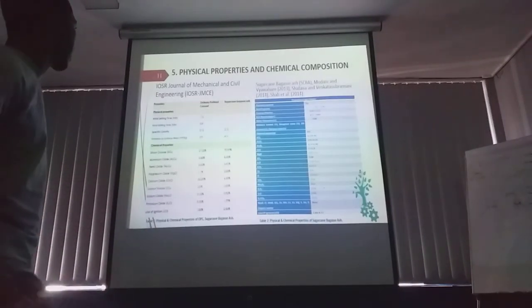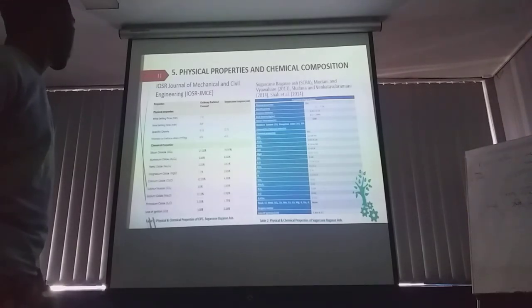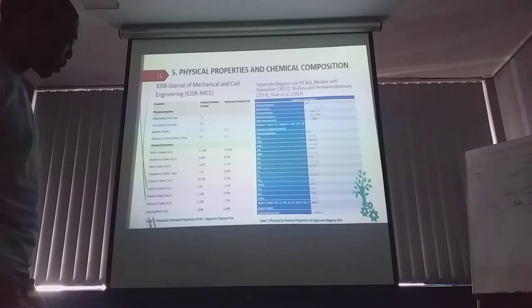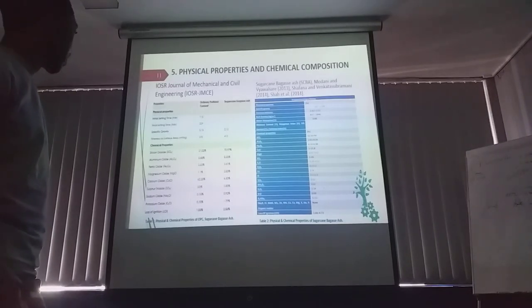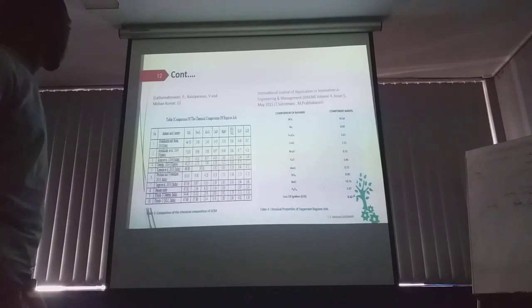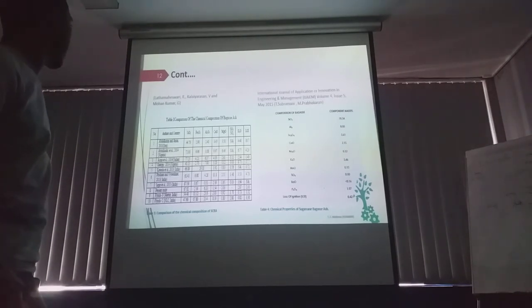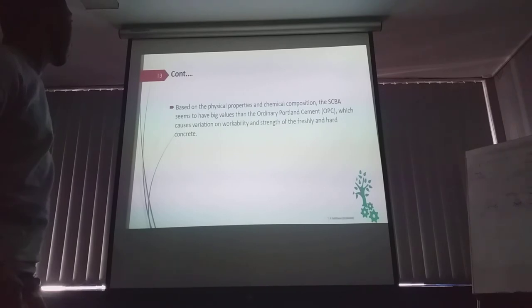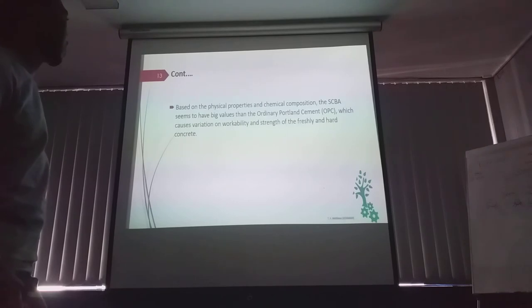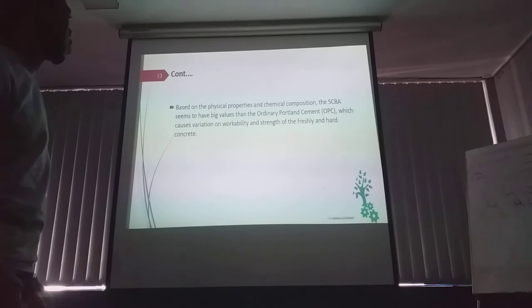These are the results obtained by the previous researchers for chemical and physical properties, shown in tables 3 and 4. Based on those results, it was found that SCBA seems to have bigger surface area values than ordinary Portland cement, which causes variation in workability and strength of fresh and hardened concrete.